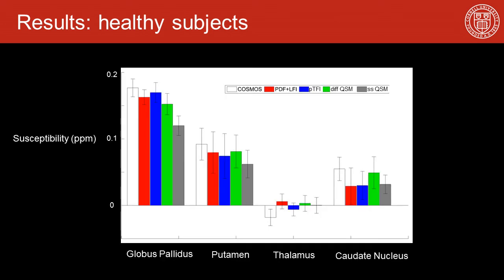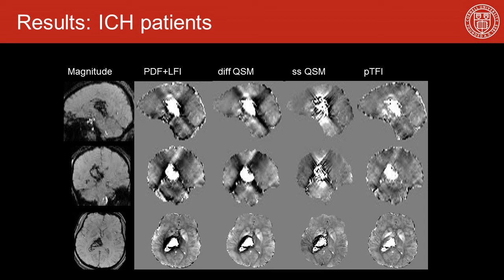In ROI measurement of the deep gray matters, we notice that for the globus pallidus, single-step QSM has significant underestimation, probably due to the L2 regularization used in its objective function. For QSM of patients with intracerebral hemorrhage, all three other methods show that the hemorrhage induces strong shadow artifacts and degrades the surrounding QSM. Meanwhile, preconditioned total field inversion suppresses that artifact because the preconditioner accounts for the strong contrast between the hemorrhage and the brain tissue.